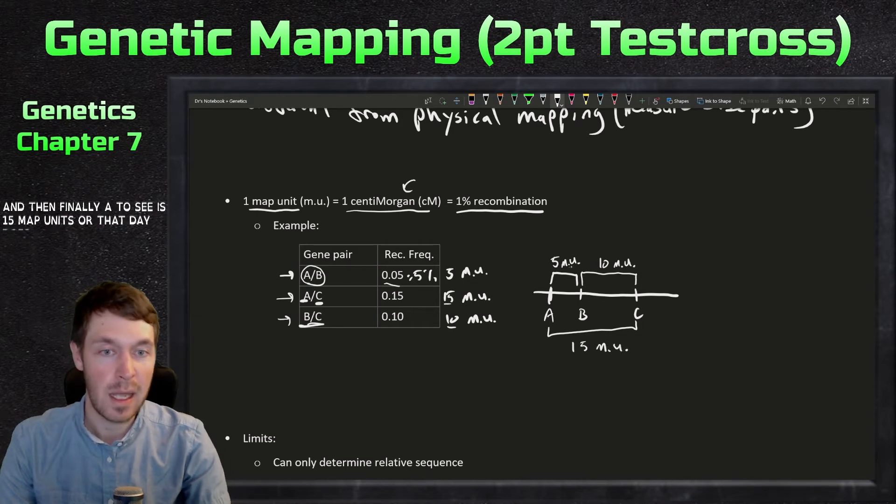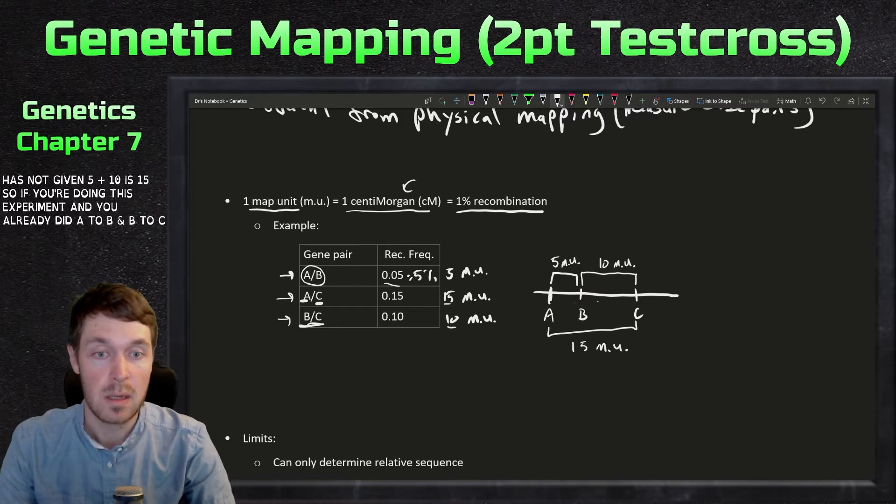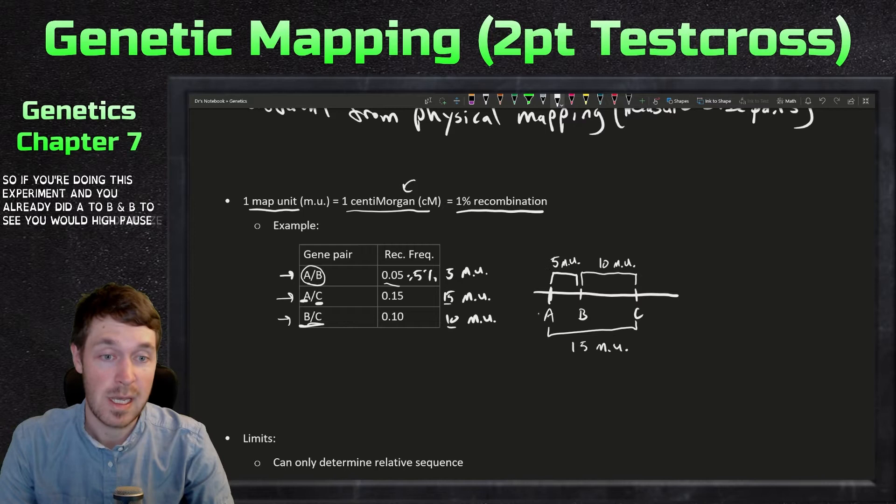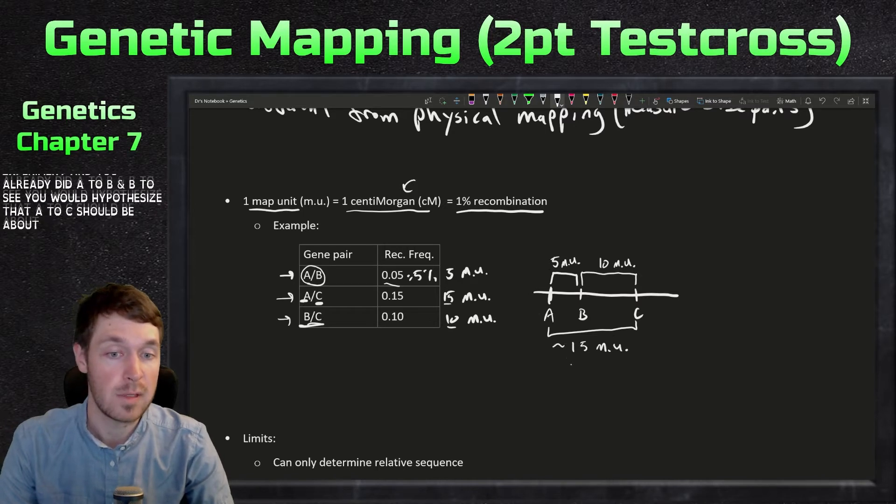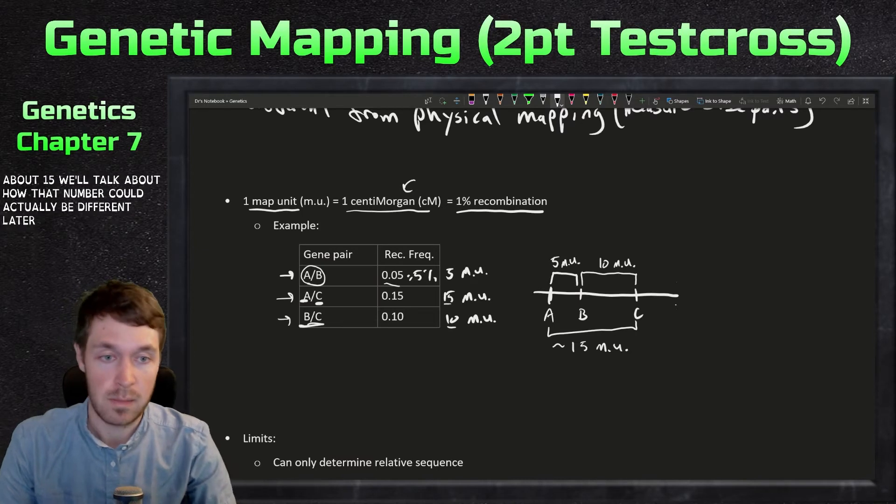Or if that data is not given, five plus 10 is 15. So if you're doing this experiment and you already did A to B and B to C, you would hypothesize that A to C should be about 15. We'll talk about how that number could actually be different later, coming up today.